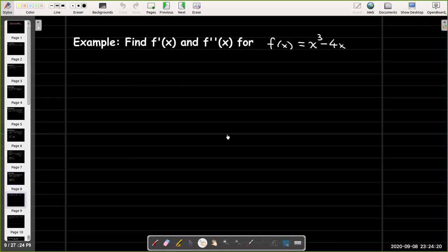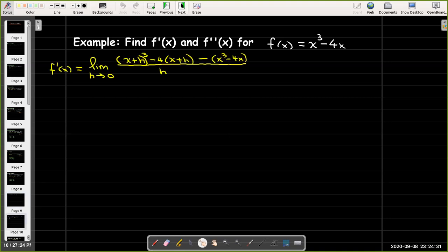Let's look at an example. We'd like to find the first and second derivative of f(x) = x³ - 4x. Let's start with the first derivative using the limit definition. So we take [f(x+h) - f(x)]/h, then take the limit as h goes to 0. I cannot just substitute 0 for h at this point.